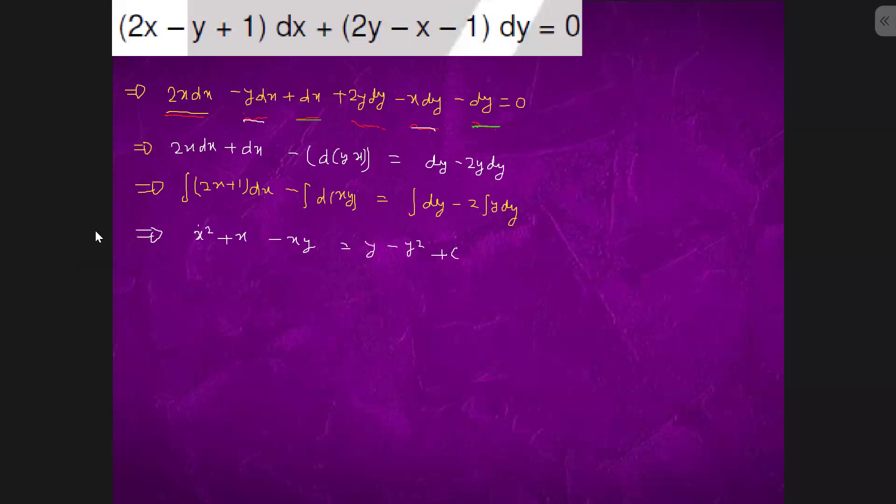This could be further simplified into x squared plus y squared plus x minus y minus xy equals to c.